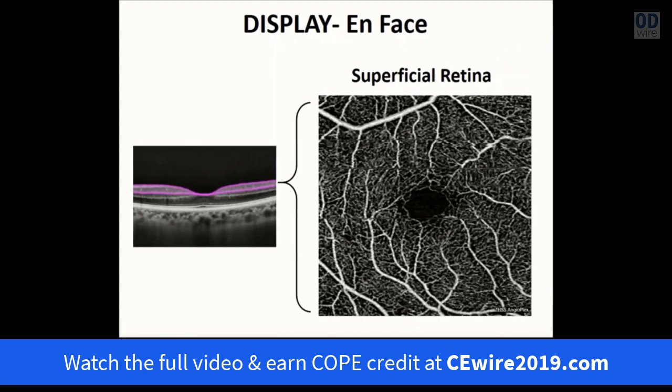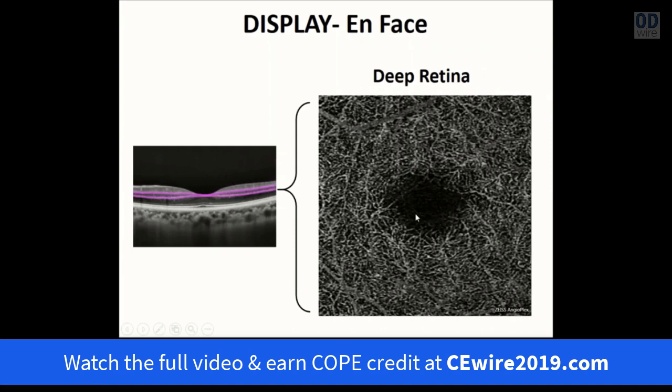Moving from anterior to posterior, the next en face image is the superficial retina — a compression of the nerve fiber, ganglion cell, and inner plexiform layers — which isolates the superficial capillary plexus and highlights the contour and size of the normal foveoavascular zone. Next is the deep retina, compressing the inner nuclear and outer plexiform layers to isolate the deep capillary plexus, where capillaries are organized into tufts or vortexes and the normal foveoavascular zone can again be visualized.